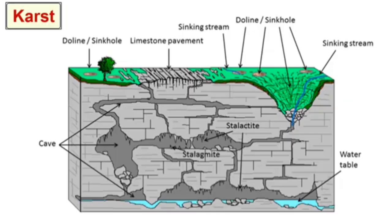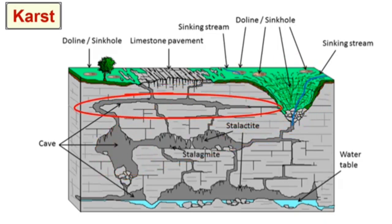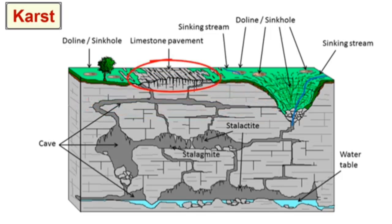Areas of the world that have limestone layers near the surface and lots of ground and surface water will display an array of landforms associated with the chemical dissolution of the limestone by the water, including caverns, sinkholes where the top of a cavern has collapsed, and tunnels. Often these structures are buried under thick layers of soil and we can't even see them. Where we do see the limestone from below just peeking up on the surface with no topsoil, we call that the limestone pavement.